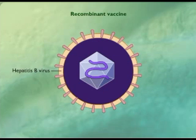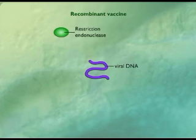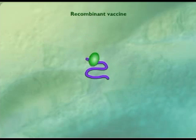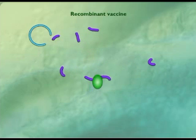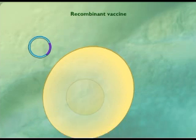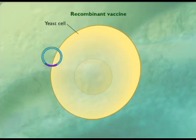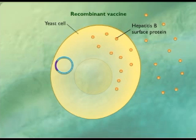Recombinant vaccines are produced by cloning the gene for a structure, such as a surface protein from a pathogen, into a host microorganism. For example, the gene for a surface protein of the hepatitis B virus has been cloned into a yeast cell. The yeast produces the virus surface protein, which can be purified from the growth medium of the yeast and used as a vaccine.